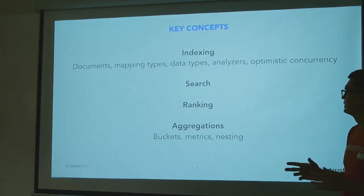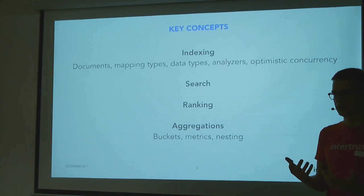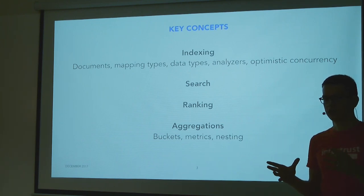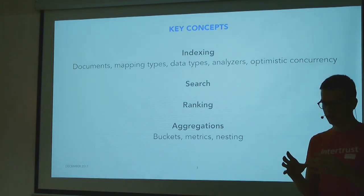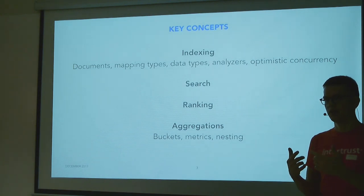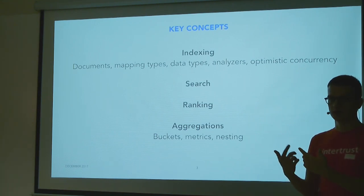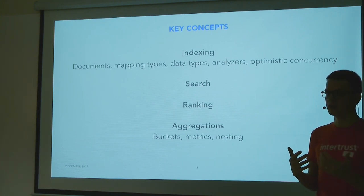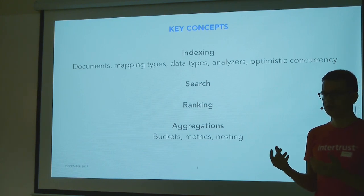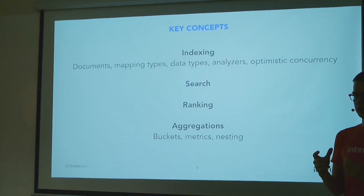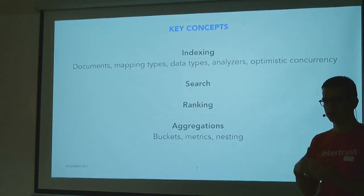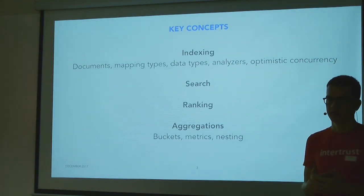An important thing to mention is analyzers. Analyzers are what make text searchable in Elasticsearch. If you put a whole Wikipedia article in a relation database as one text field, it would be difficult to search and rank matching documents. Elasticsearch uses text analyzers to make sense of text fields. For example, it can understand English — so if you have 'dog' or 'dogs' in different documents, it will understand them as the same term. If you search for 'dog', it will match documents containing 'dogs' and vice versa.